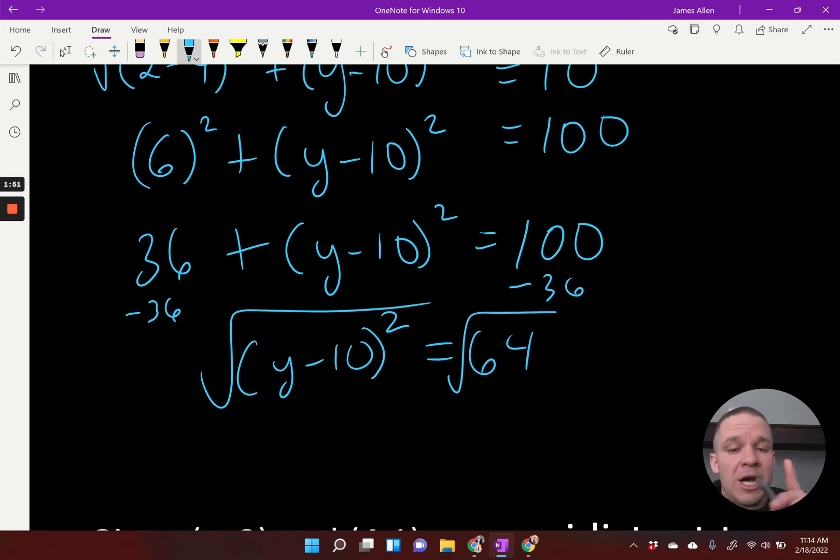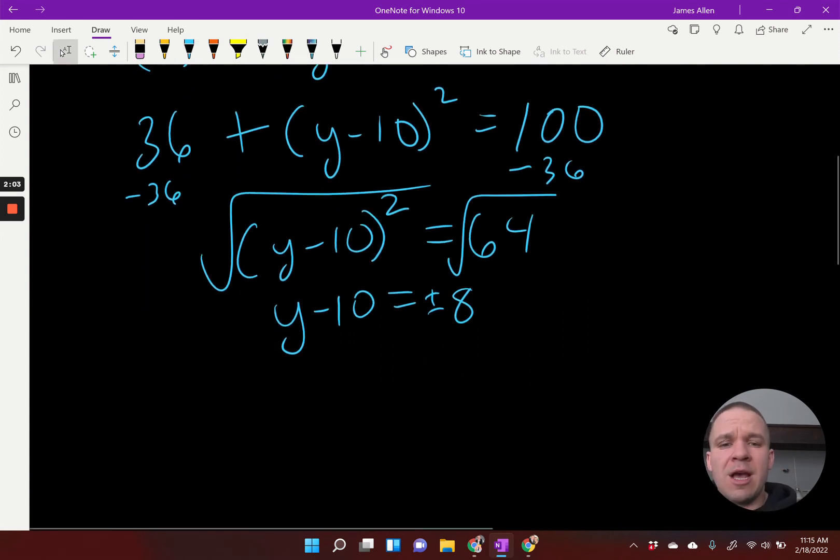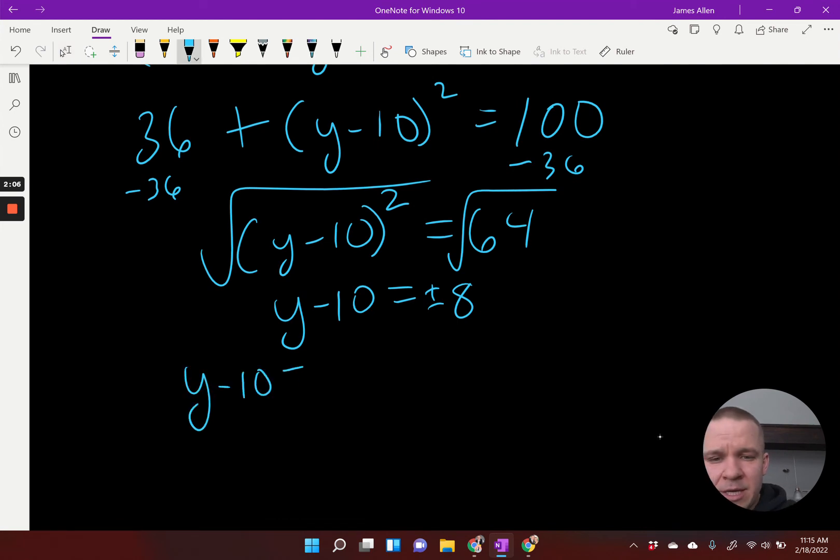Now I can use square roots to solve this one. And if I square root on both sides, I'm going to get y minus 10 equals 8. Don't forget though, when solving using square roots, we have both positive and negative 8. So now I'm going to set up two separate equations. You could do this all on the fly, but I like to do y minus 10 equals 8, and y minus 10 equals -8. My two scenarios.